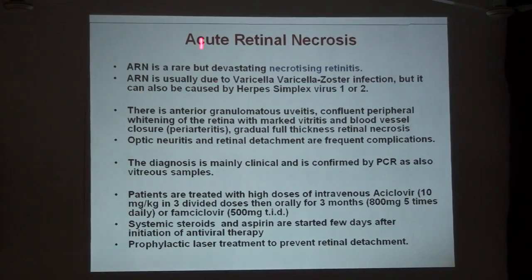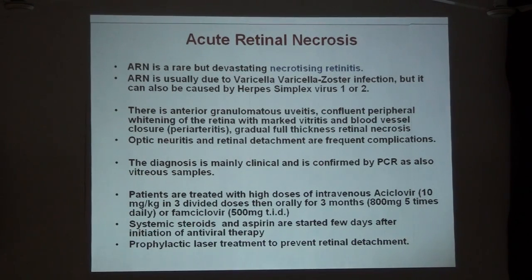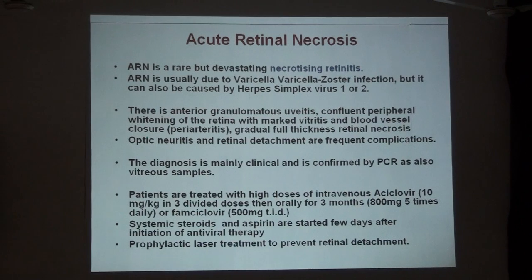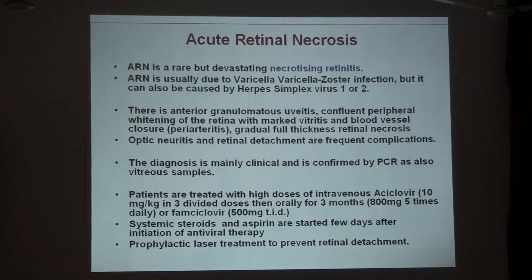Another devastating form of necrotizing retinitis is acute retinal necrosis. This is not specific to HIV — it can occur in immunocompetent patients as well. Varicella-zoster virus types 1 and 2 are the offending agents. Initially there is anterior granulomatous uveitis, then confluent areas of retinal whitening with marked vitritis, blood vessel closure, and full-thickness retinal necrosis. Optic neuritis and retinal detachment are complications. Diagnosis is mostly clinical, confirmed by PCR with vitreous samples. Treatment is intravenous acyclovir at high doses, then continued orally for 3 months, or famciclovir. Corticosteroids and aspirin are started a few days after antivirals to prevent periarteritis. Prophylactic laser may be given, and if retinal detachment occurs, vitreous surgery with silicone oil is indicated.